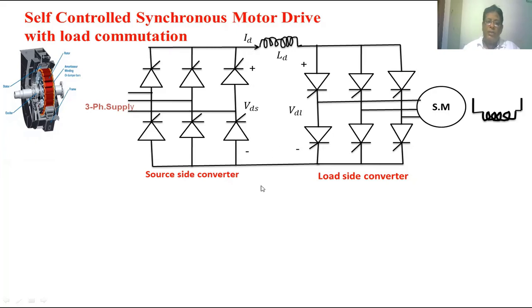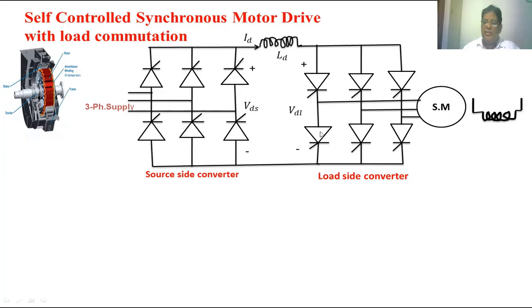Now we are going to see how exactly the power will be passing from the source to the load. The load is a synchronous motor. If we maintain the firing angle of the source side converter less than 90 degrees, then this converter will be acting as a rectifier, so the AC will be converted to DC. If we maintain the load side converter firing angle greater than 90 and less than 180 degrees, then this converter will be acting as an inverter. So the power will be passing from the source side to the motor.